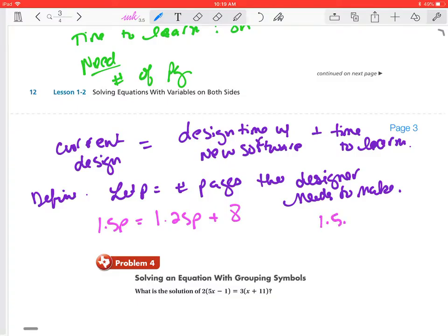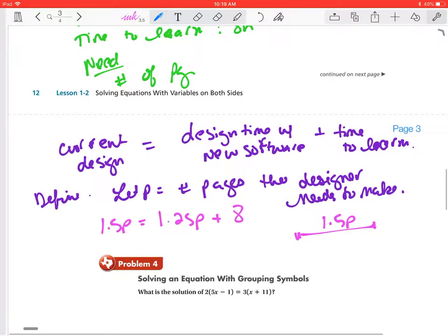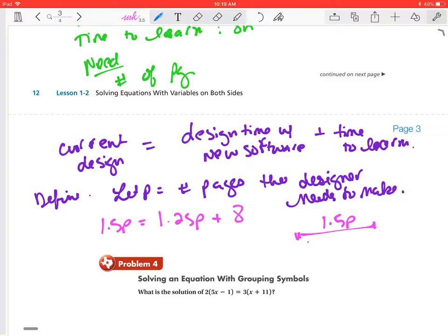We can also look at it this way. The total time is 1.5P pages, and in the 1.5P, we have the 1.25P plus the eight. That's how we can think of it in terms of relating it as an equation.